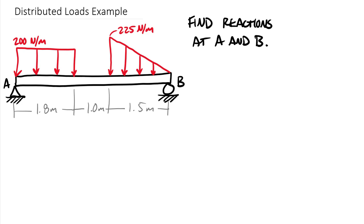Let's work through an example so you can see the workflow. Feel free to pause the video to get the problem drawn out. This beam has a total length of 4.3 meters. There are two distributed loads: one over the first 1.8 meters with a constant value of 200 newtons per meter, and another with a maximum value of 225 newtons per meter decreasing down to zero newtons per meter over the remaining length.